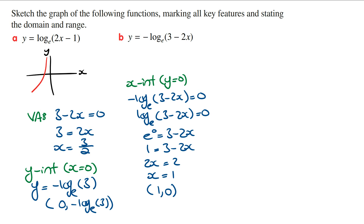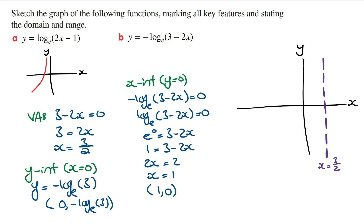You can now draw the axes, sketch the vertical asymptote with a dashed line and write down its equation, mark the coordinates of the x and y intercepts, and then sketch the graph.